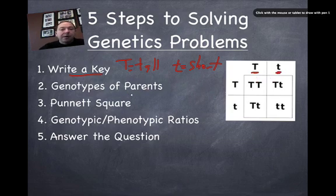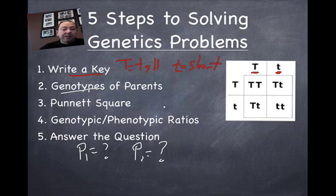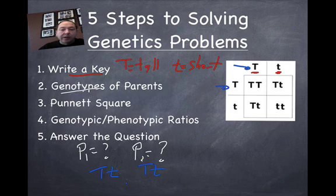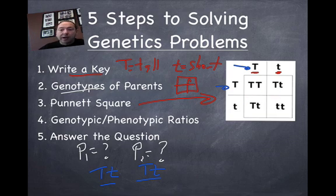The second step is to identify the genotypes of the parents — the combinations of letters that our parents have. We typically write parent one equals something and parent two equals something else, and that information will be given to us in the problem. In this example, one parent is big T, little t, and the other parent is also big T, little t. The third step is to work out the Punnett square — literally draw out the square, write the products of meiosis on the outside, and then work out the probabilities of all the different potential fertilization combinations inside.